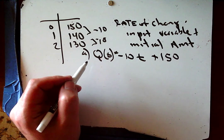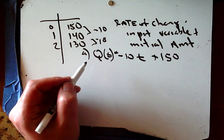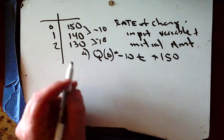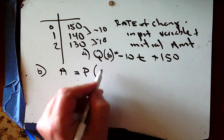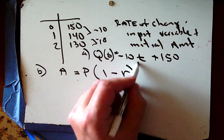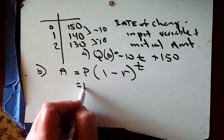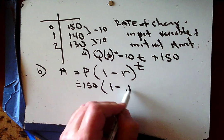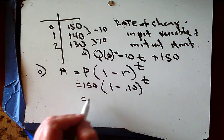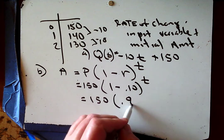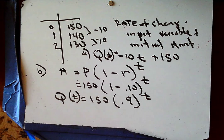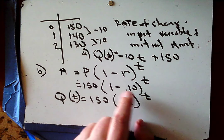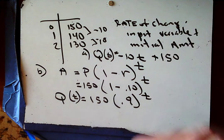Part B: the soap decreases by 10% per day. That's exponential. Using the model P(1 − r)^t: Q(t) = 150(1 − 0.1)^t = 150(0.9)^t. We're losing soap, so it's 1 minus the rate.